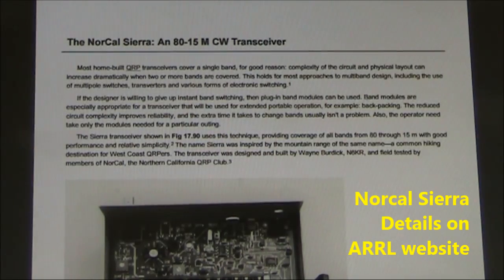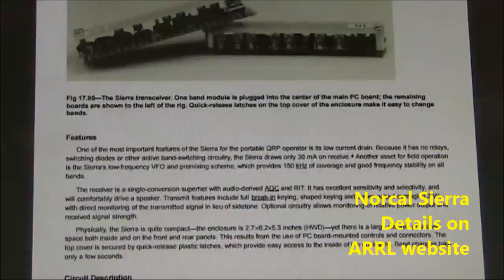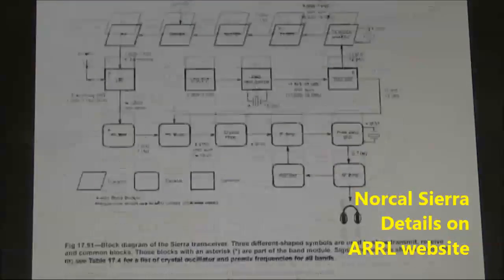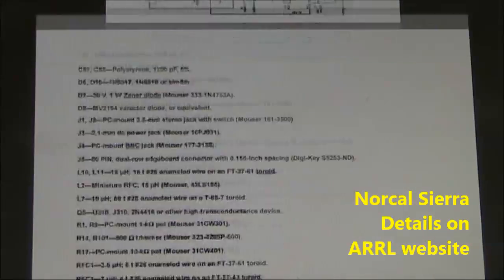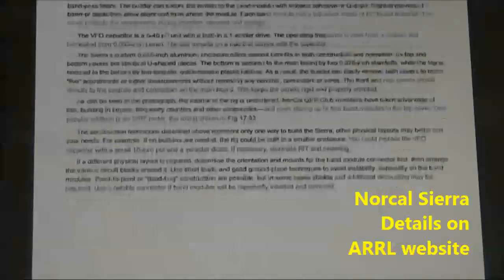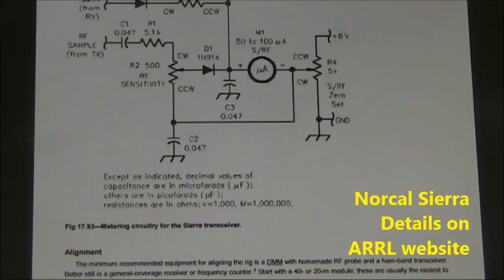If you want to build a full QRP transceiver, and need more information than which I've provided, I'd definitely recommend going to the ARRL website and having a look at the article on the NorCal Sierra. It's very detailed. There's the circuit, parts list, and some other information.